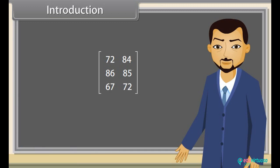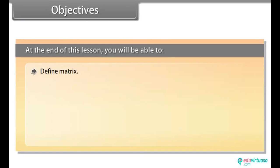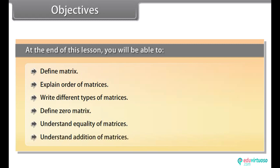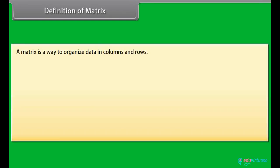Can you see I have written your marks in this bracket? What does this represent? This represents a matrix. Today we will learn what matrices are and their operations. At the end of this lesson you will be able to define a matrix, explain the order of matrices, write different types of matrices, define zero matrix, and understand equality and addition of matrices.